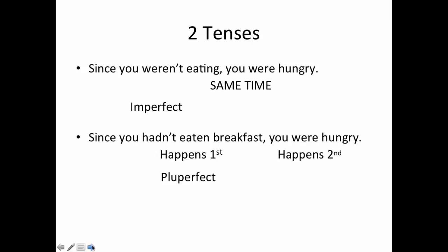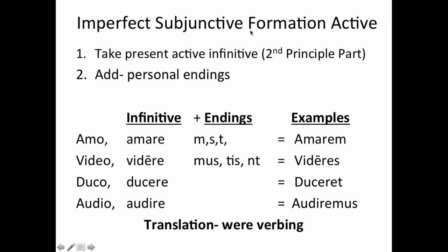Now we're going to move into the formation of these tenses. The imperfect subjunctive formation — active: all you're going to do is take the present active infinitive, what we call the second principal part, and just add the personal endings. So you look here: amare plus -m, -s, -t, -mus, -tis, -nt — you get amarem, amares, amaret, amaremus, amaretis, amarent. The same thing with video, duco, or audio — all you're doing is adding -m, -s, -t, -mus, -tis, -nt to the infinitive, to that second principal part. You're going to translate this just as you do any other imperfect verb.